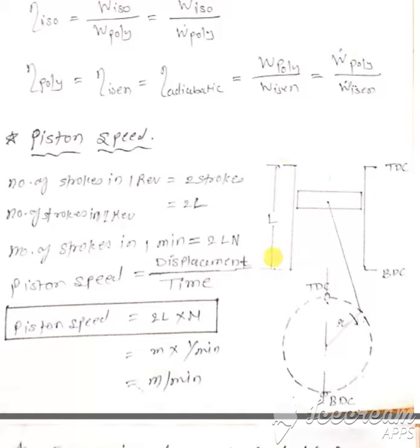In one cycle, it covers 2L. Therefore, number of strokes in one revolution is 2 strokes, which means 2L. Number of strokes in one minute is 2L times N. Piston speed equals displacement upon time. Displacement is 2L and time is N.